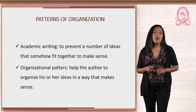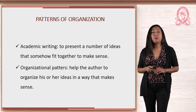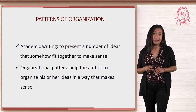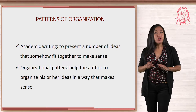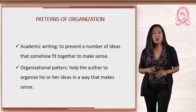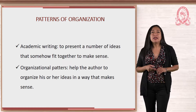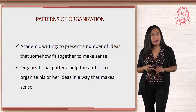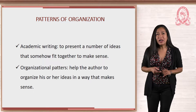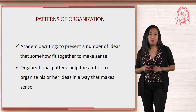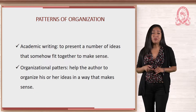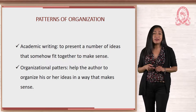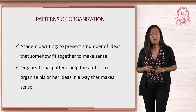In its website, the University of Valencia in Orlando, Florida states that the purpose of academic writing is to present a number of ideas that somehow fit together to make sense. Sometimes the amount of new concepts, new words, and facts can be very large and complex. Professors, textbook authors, and researchers use a framework or plan that helps to communicate their ideas clearly. There are several types of plans, called organizational patterns, that can be identified in academic writing. They help the author to organize his or her ideas in a way that makes sense, and hopefully they help you to understand the material being presented.